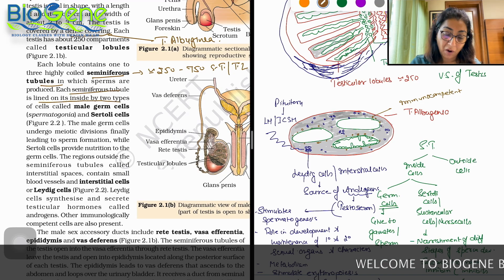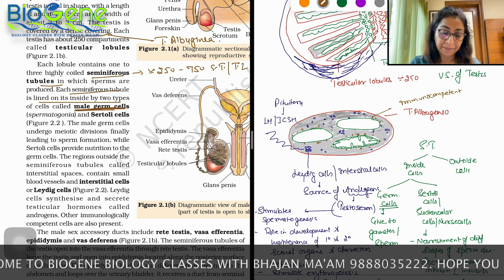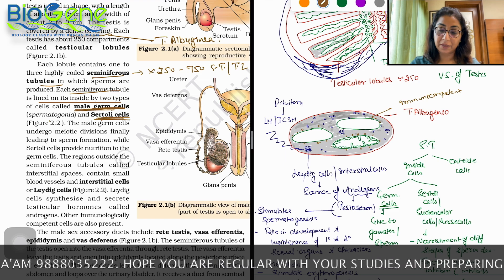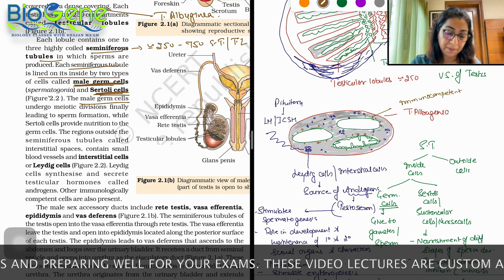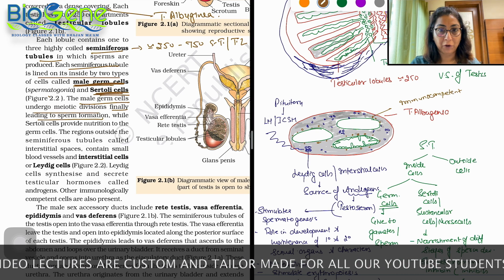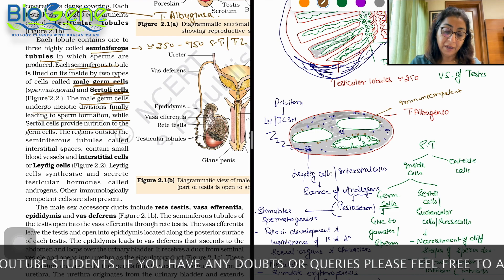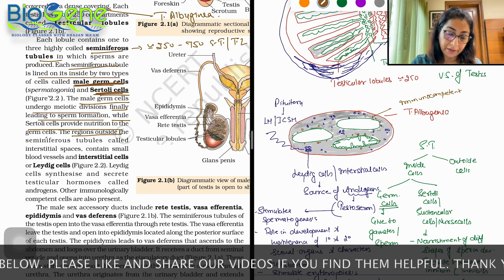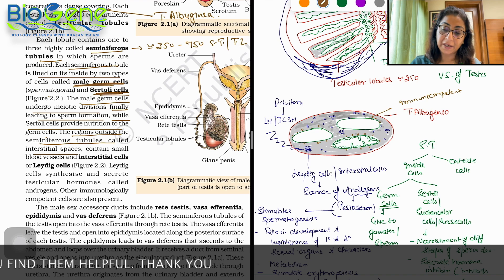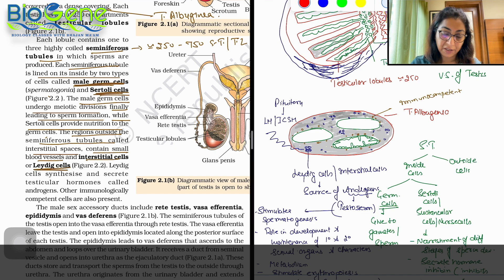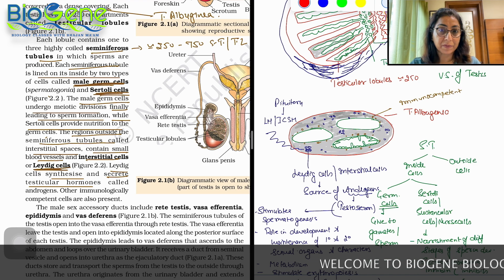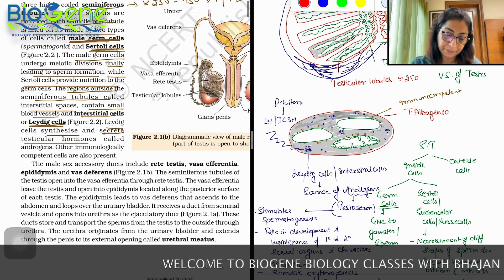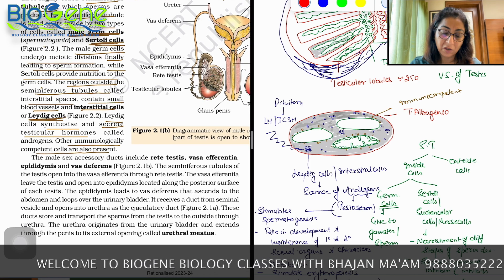Each seminiferous tubule is lined on inside by two types: male germ cells, that is spermatogonia, and the Sertoli cells. The male germ cells undergo meiotic divisions finally leading to sperm formation, while Sertoli cells provide nourishment and nutrition to germ cells. Above NCERT we have discussed ABP. The region outside the seminiferous tubules, we are talking about interstitial spaces. Interstitial spaces synthesize under the effect of LH, secrete testicular hormone androgens. Immunological competent cells are also present.